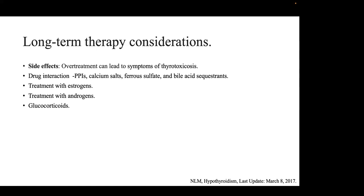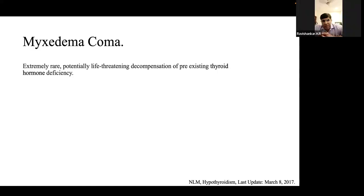Glucocorticoids produce a mixed response: on one hand they decrease binding of hormone to serum proteins, increasing free thyroid hormone; on the other hand they decrease TSH secretion and impair peripheral T4-to-T3 conversion. The main effect is that glucocorticoids prevent peripheral conversion of T4 to T3.